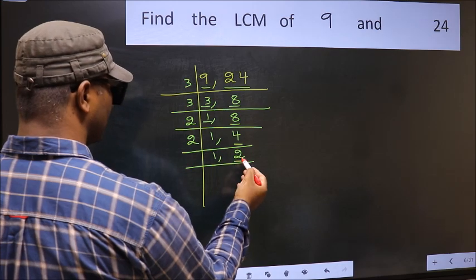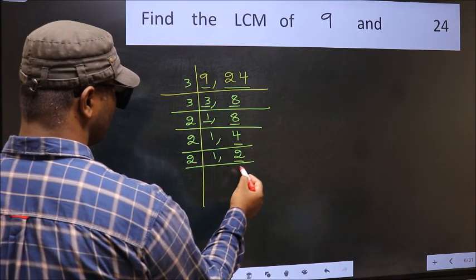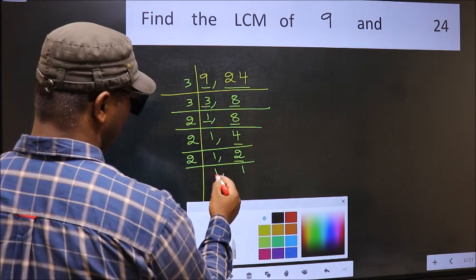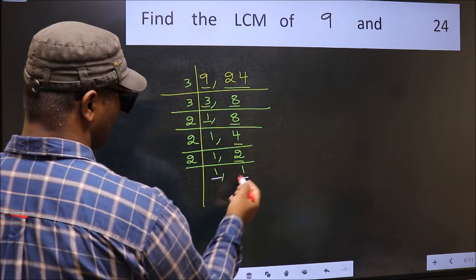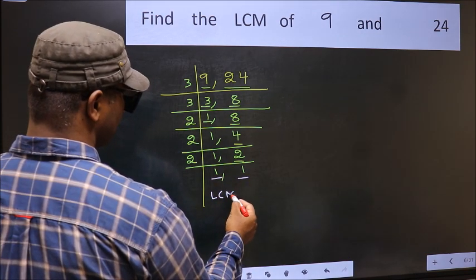Now we have 2. 2 is a prime number, so 2, 1 is 2. So we got 1 in both the places. So our LCM is,